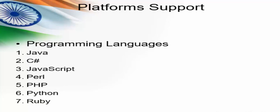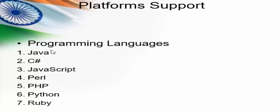Selenium supports seven programming languages: Java, C Sharp, JavaScript, Perl, PHP, Python, and Ruby. If you know any one of these languages, you can use it for Selenium. However, I will be using Java for coding, and most projects use Java only, because there are many online portals and blog support available for Java. It is easy to get sample code, and if we face any queries, we can post on an online forum and get many solutions.